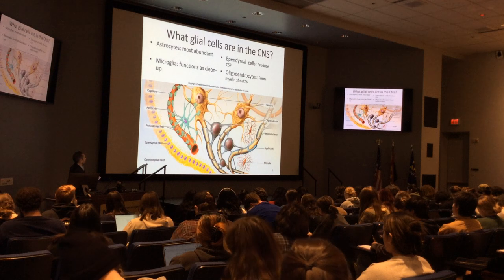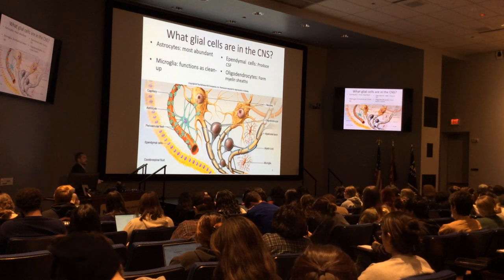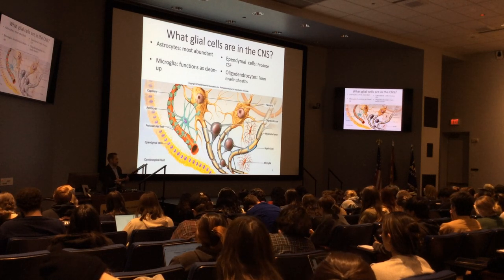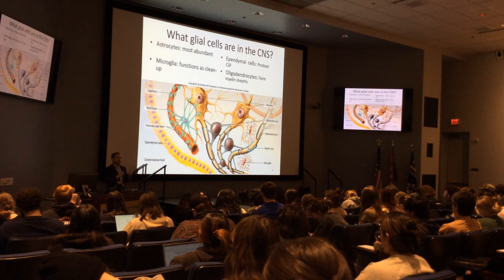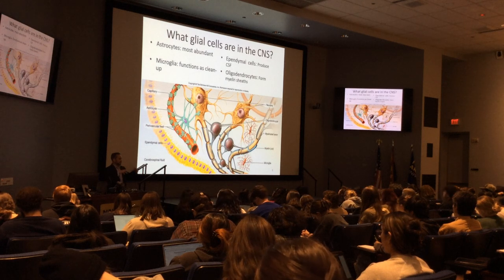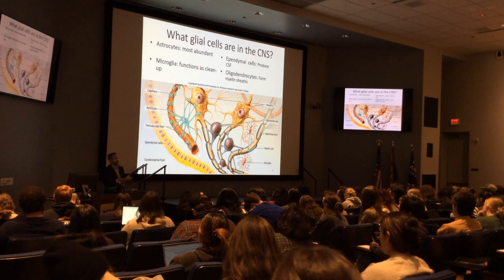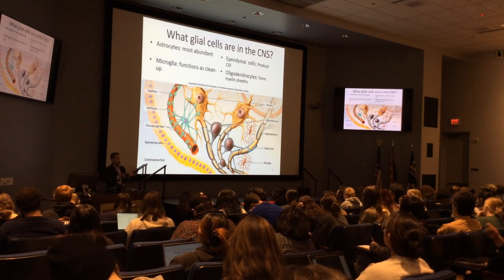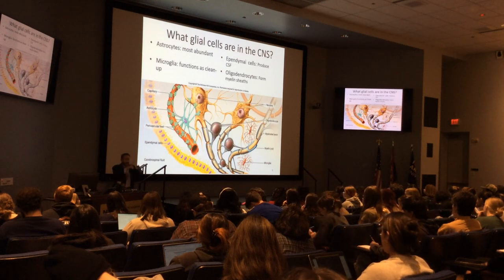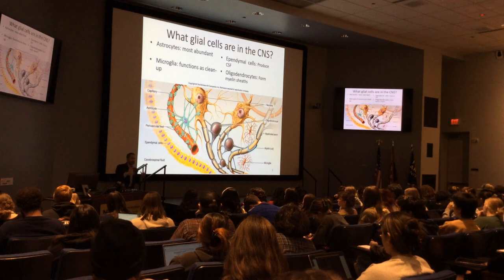Third: the ependymal cell produces the cerebrospinal fluid — a plasma-like filtrate from the bloodstream that bathes the entire brain and spinal cord. Like bobbing for apples: the brain and spinal cord sit in a cavity full of fluid and float inside it. That fluid perfuses through the brain and spinal cord through the ventricular system. You'll see this more in lab and we'll get into it in subsequent lectures.